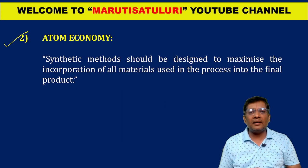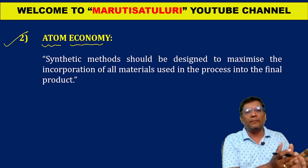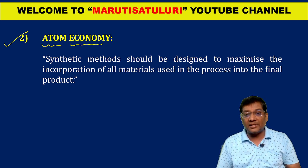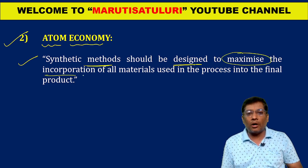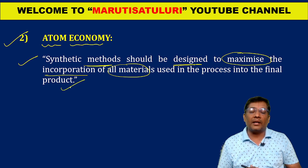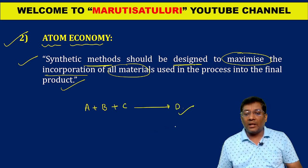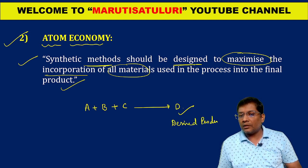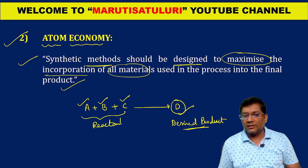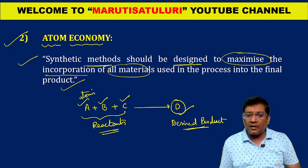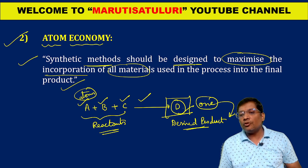Coming to the second important principle: atom economy. In all chemical reactions, the atoms present in the reactants should all be incorporated in the chemical reaction itself to form a main product. The definition is: new synthetic methods should be developed or designed to maximize the incorporation of the materials used in the process into the final product. For example, if A, B, and C are reactants and D is the desired product, all atoms should ideally go into producing D.